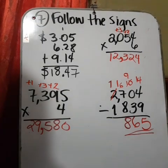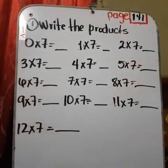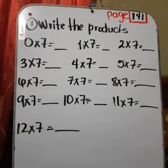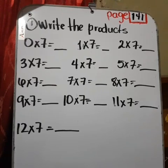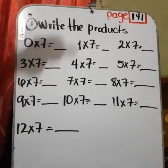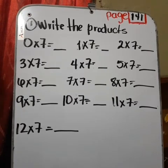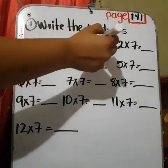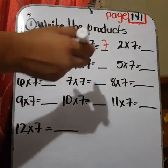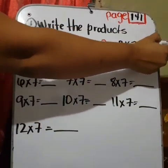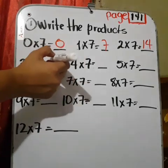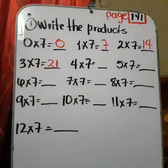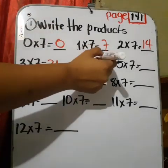Next page, now you will see exercise one, page 141. Look at the page, 141, exercise one, write the products. Zero times seven, zero. One times seven, seven. Two times seven, fourteen. Three times seven equals twenty-one. Four times seven, twenty-eight.